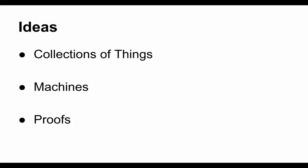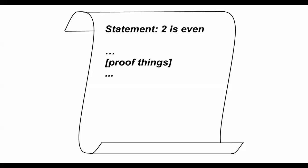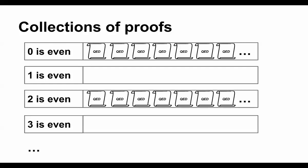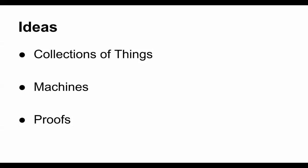The other thing we want to merge together is the idea of collections of things and proofs. We can have collections of proofs — take all the proofs of a given statement and put them in a collection. If you have the statement '0 is even,' you've got a lot of proofs. If you have '1 is even,' you don't have many. If you can show there's anything in a collection for '2 is even,' you can show that 2 is even.